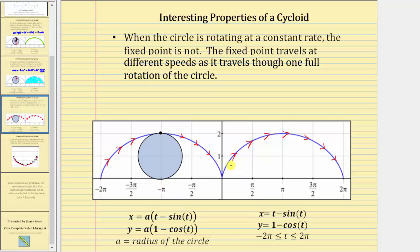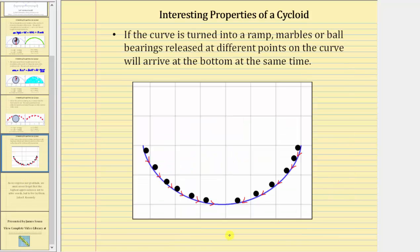And finally for the last property, which I find the most interesting, if the cycloid curve is turned into a ramp as pictured here, and marbles or ball bearings are released at different points on the curve, they will all arrive at the bottom of the curve at the same time.